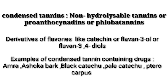Condensed tannins are non-hydrolyzable tannins, also called proanthocyanidins or phlobaotannins. These are derivatives of flavones like catechin or flavonol-3-ol. Examples include amra, ashoka bark, and black catechu.